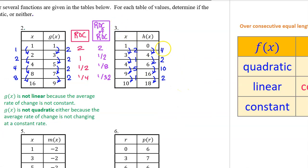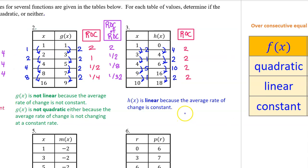For number 3, here are the output value changes and the input value changes. Since we do not have consecutive equal-length input value intervals, we need to actually calculate the average rate of change: 4 over 2 is 2, 2 over 1 is 2, 10 over 5 is 2, and 2 over 1 is 2. If asked to justify, we would say that h(x) is linear because the average rate of change is constant. Notice that for linear functions, we do not need equal-length input value intervals — that's just for quadratic.